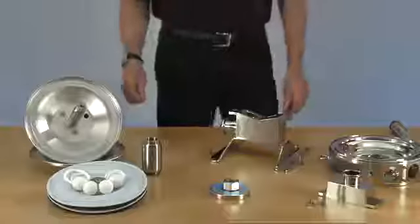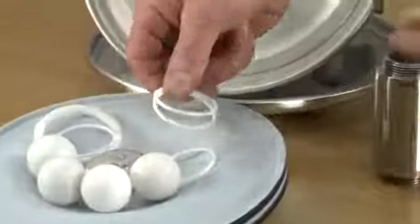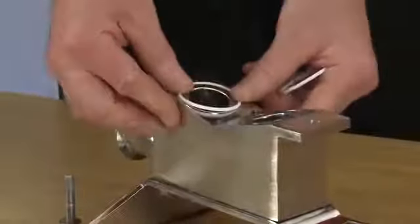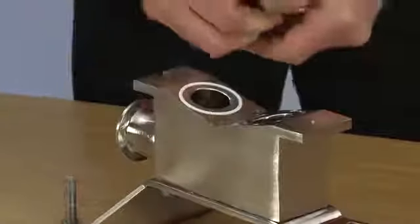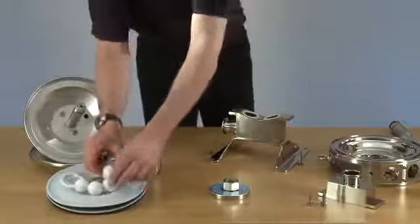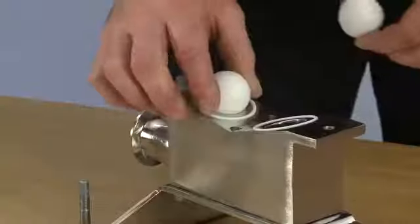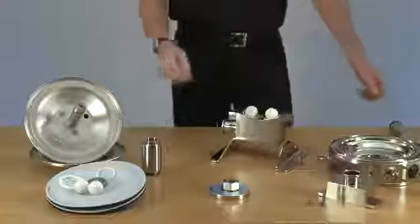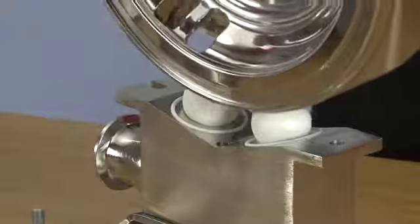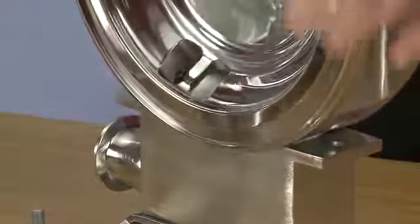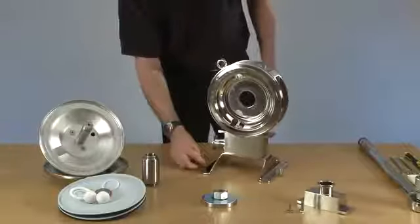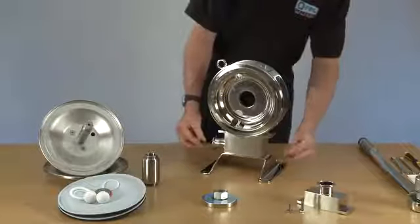Now we're ready to start reassembling the pump, and we're going to start by putting the two seals into the suction manifold. Now we're going to put the two balls in, and then we can replace the body. Making sure it's seated, and then we can replace the two securing screws.